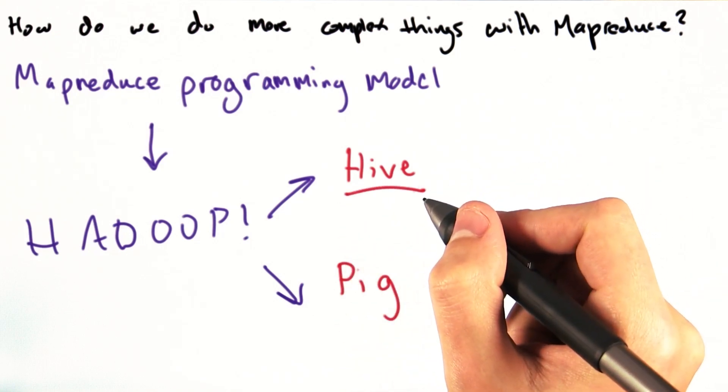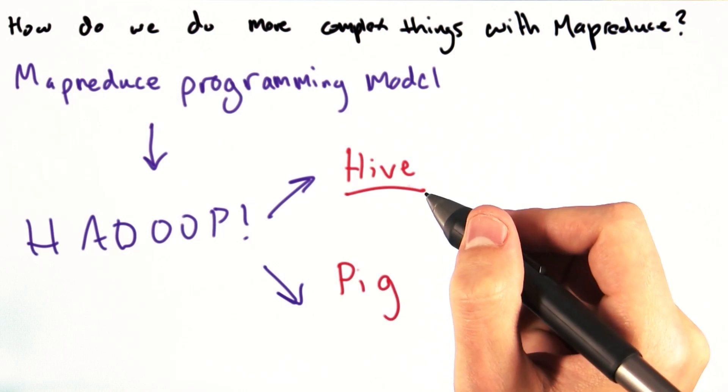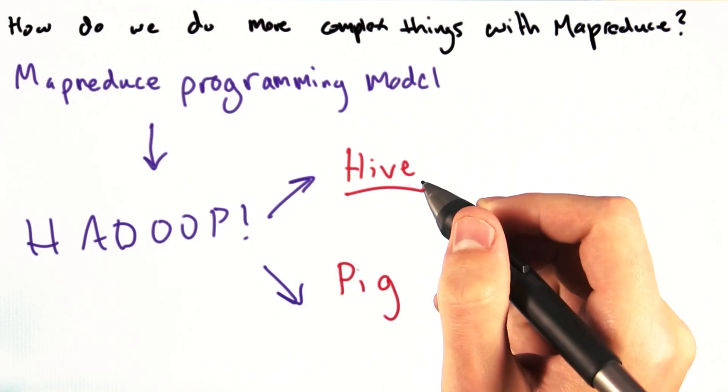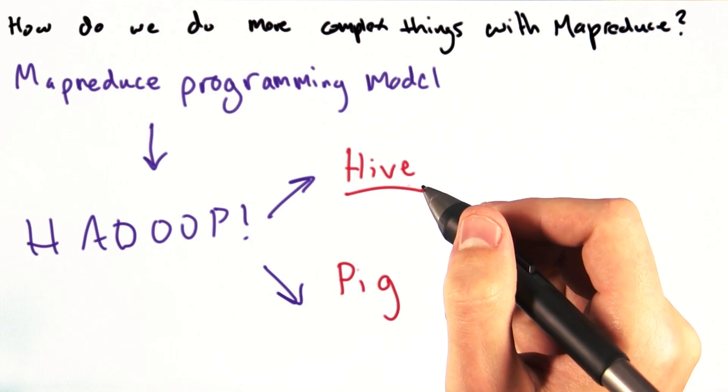Hive was initially developed by Facebook, and one of its biggest selling points is that it allows you to run MapReduce jobs through a SQL-like querying language called the Hive query language.